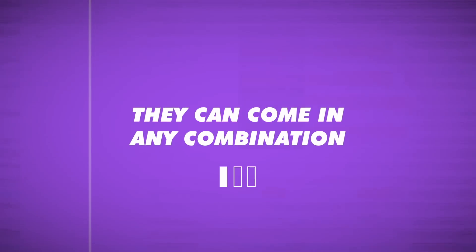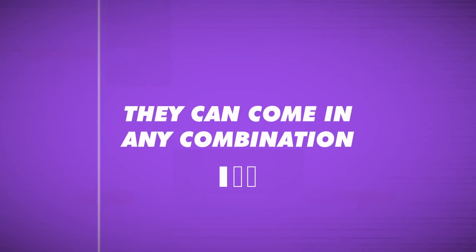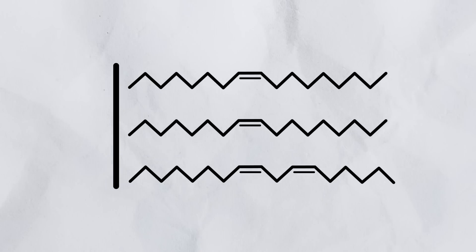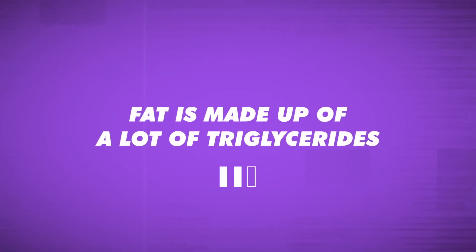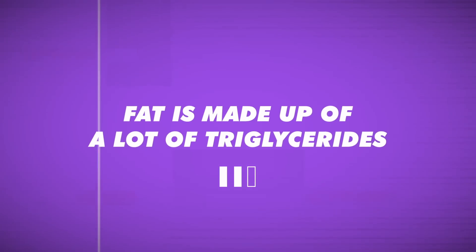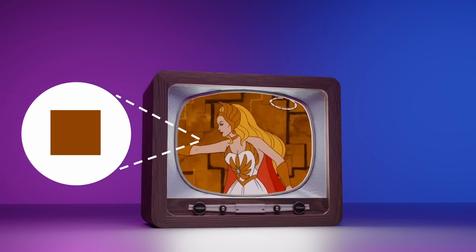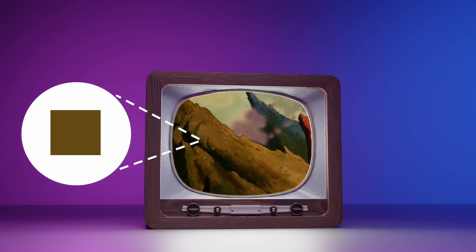If we really want to understand fat, we have to understand three things about triglycerides. Number one: they can come in any combination of saturation — all saturated, all polyunsaturated, or two monounsaturated and one polyunsaturated. Just like a Rubik's cube, there are numerous combinations. Number two: fat is made up of a lot of triglycerides. We are extremely micro, extremely zoomed in when we're looking at one single triglyceride — like looking at one single pixel on a TV screen. We can't necessarily see pixels, but we know whatever we're watching is made up of them.